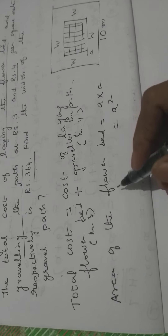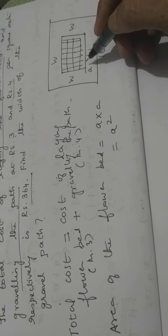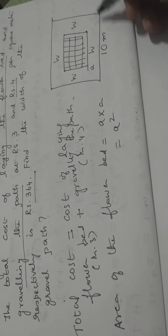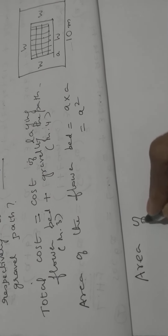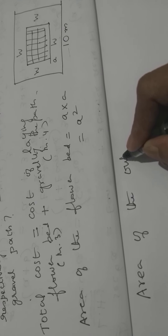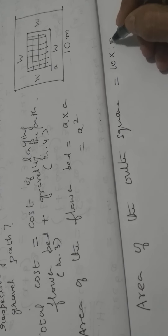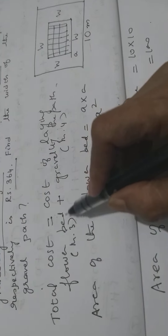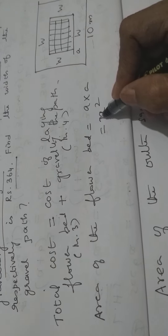Now, the area of the graveling path — we have to find it. For that, we have to find the area of the outer square first. The area of the outer square is 10 × 10 = 100. The flower bed area is A squared, and since the cost is ₹3 per square meter, multiplying gives us 3A squared.